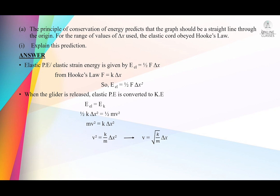After cancelling the half, mv² = kΔx², so v = √(k/m) × Δx. Since k and m are constants — spring constant and mass — this is of the form y = mx, which is linear. Therefore, a graph of v against Δx is a straight line through the origin.